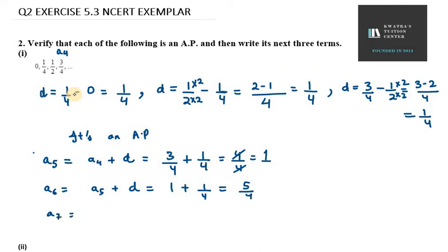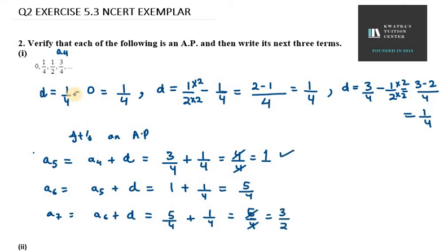Now we need to find A7. A7 will be A6 plus D. The sixth term is 5/4 and we need to add 1/4 to it, so it will be 6/4. The seventh term is 3/2. So A5 is 1, A6 is 5/4, A7 is 3/2 — this is the answer for the first part.